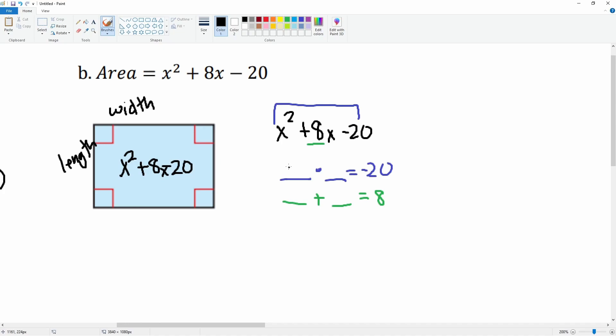Let's see which one's negative. The negative is on the 2: -2 × 10 = -20, and -2 + 10 = 8. Then we divide by the 1x—those do not simplify, leaving you with (x - 2) and (x + 10).